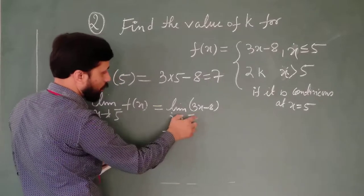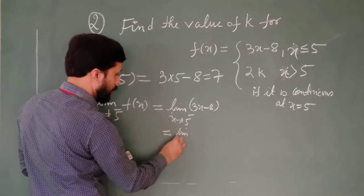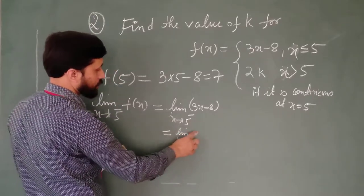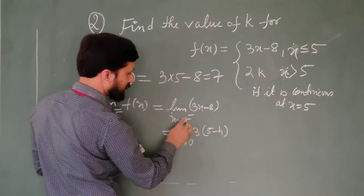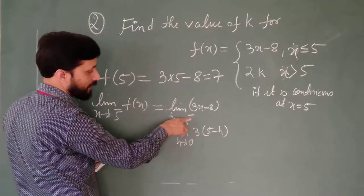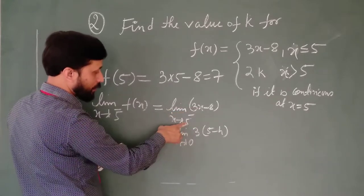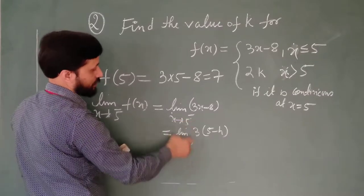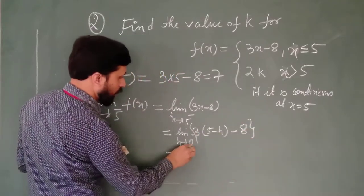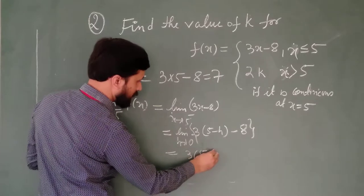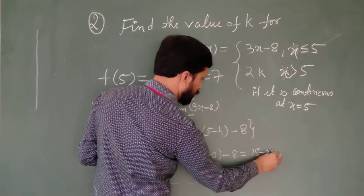After this, we will change the value in terms of h. Since it is the left hand limit, we will replace x with 5 minus h. Why 5 minus h? Because this is your left hand limit — for the left hand limit you replace x with 5 minus h. So write minus 8, put this in, and put the value of h as 0: 5 minus 0 minus 8. Simplify: 15 minus 8 equals 7.